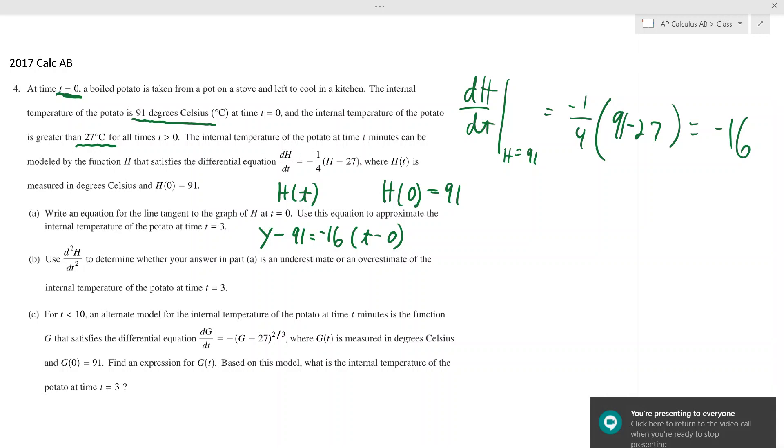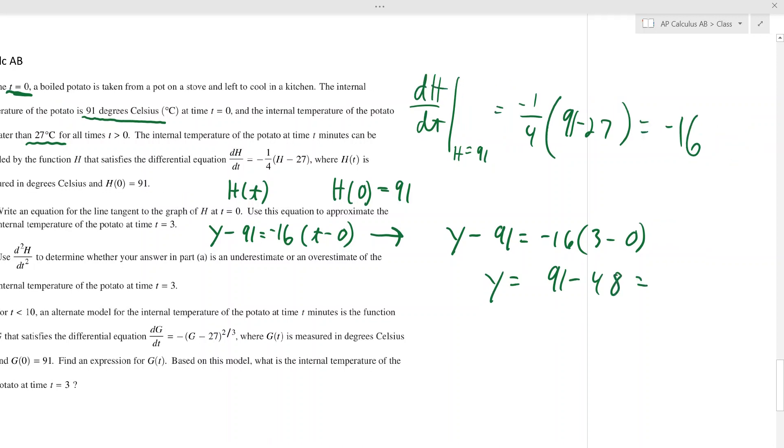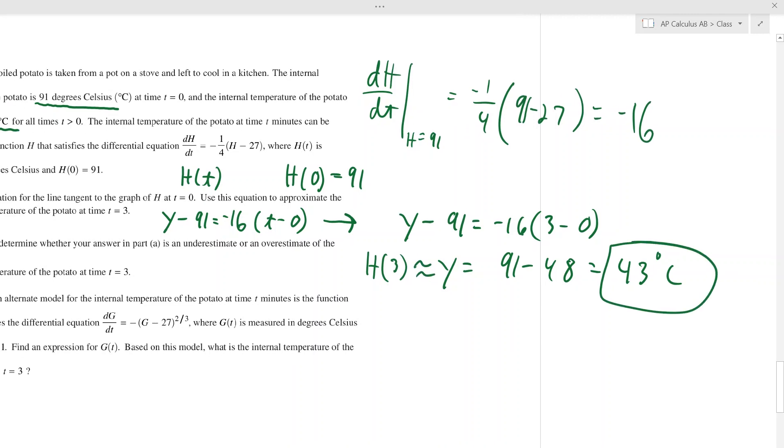B says, and these are super typical of these differential equation questions on the AP test. It says use it to approximate the temperature at three. Well, that means we're just going to plug in a three. So y minus 91 is negative 16 times three minus zero. That means y is 91 minus 48, which is 43 degrees. That is approximately h of three.